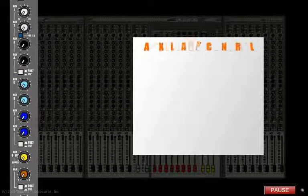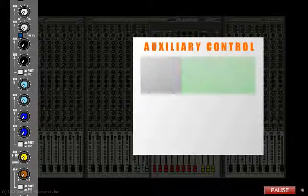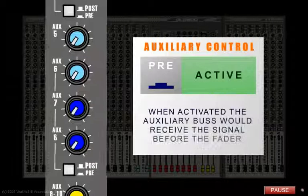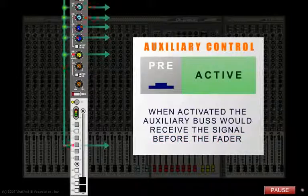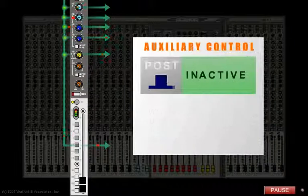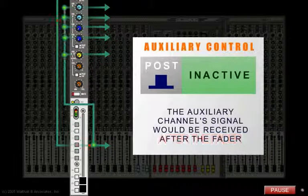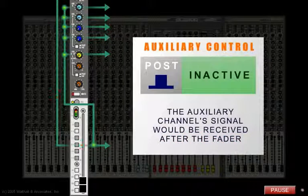For example, if the auxiliary control has a pre-button, when activated, the auxiliary bus would receive the signal before the fader. This means the auxiliary control will be completely independent of the fader. If it's inactive, the auxiliary channel signal would be received after the fader and thus affected by the position of the fader.